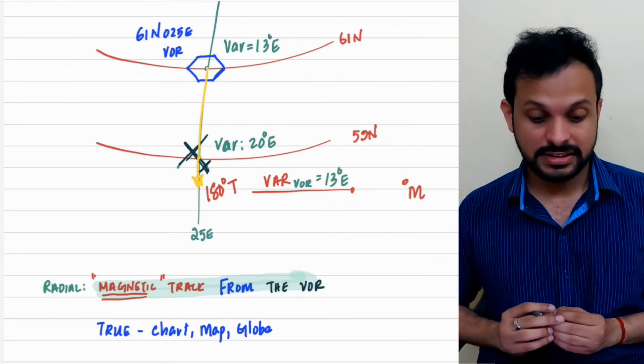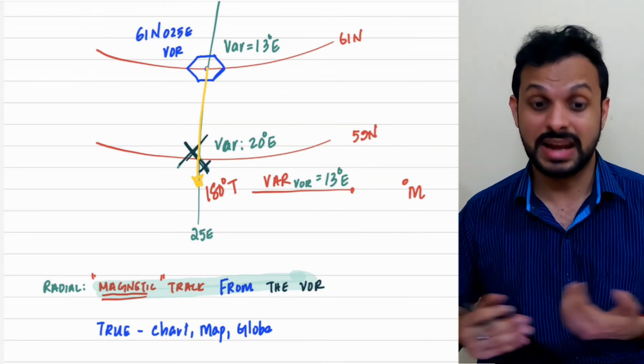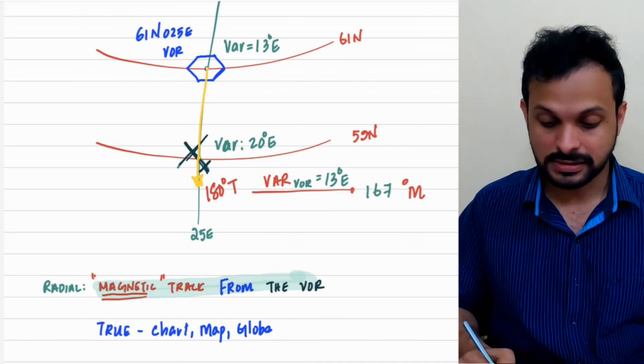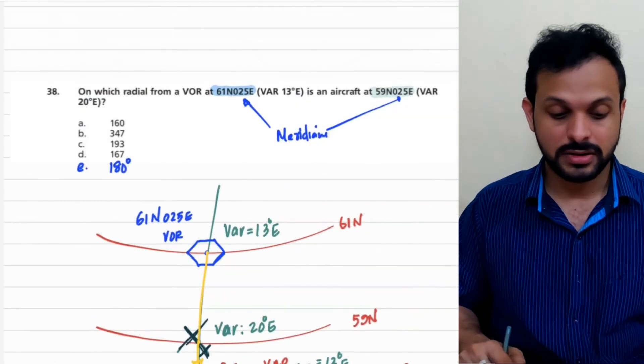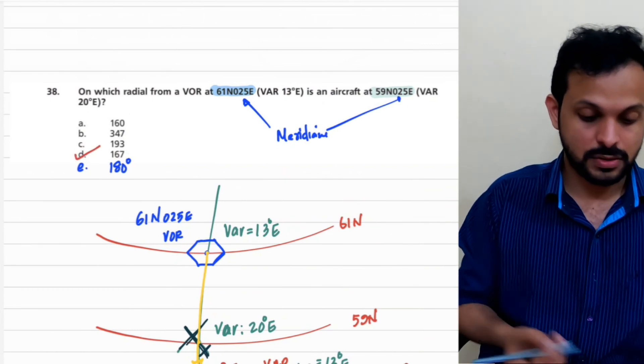So 180 degrees true, 13 degrees east variation. The famous mnemonics: east is magnetic is least, and therefore 180 minus 13, and that's 167 degrees magnetic. Let's look at the option here. You have it straight away, delta 167.